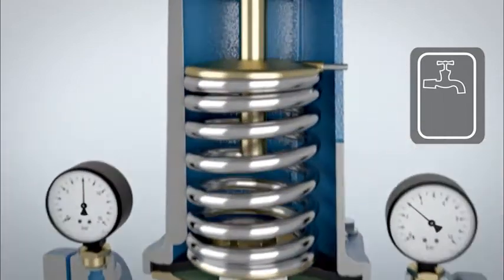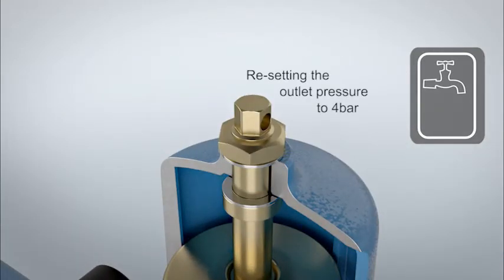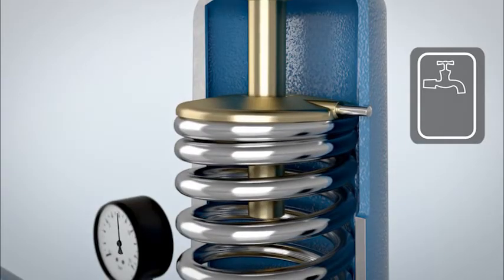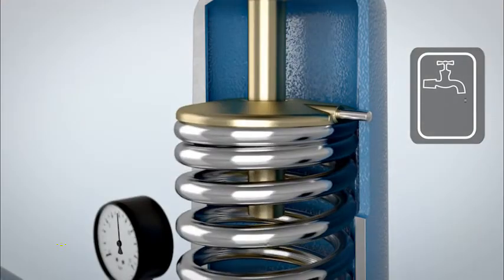The outlet pressure is adjusted via the tension of the spring load. The clockwise rotation of the adjustment spindle increases the outlet pressure and anti-clockwise reduces it.